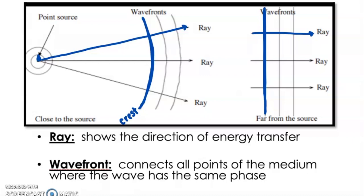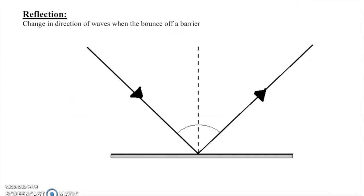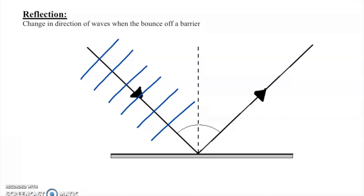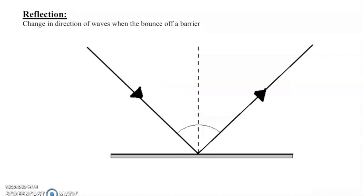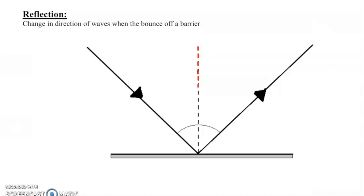Our focus today is reflection and refraction. Reflection is when a wave changes direction by bouncing off a barrier. In diagrams we draw rays rather than wave fronts to keep things clean, and we always draw in a dotted normal line — perpendicular to the surface — as our reference for all angles.